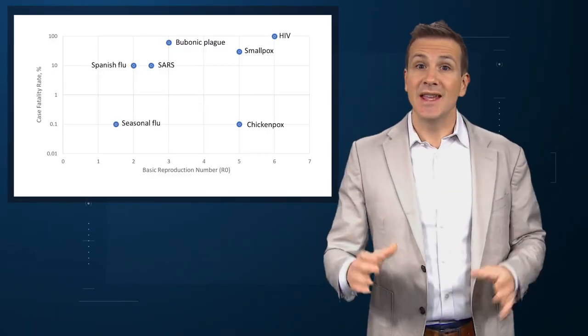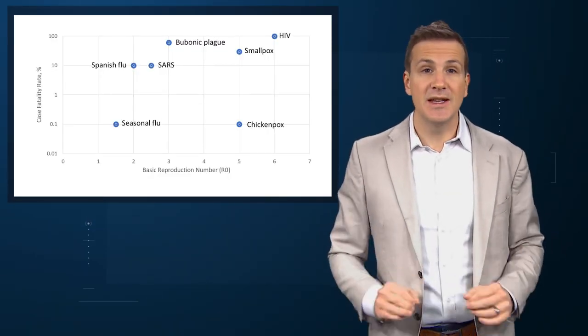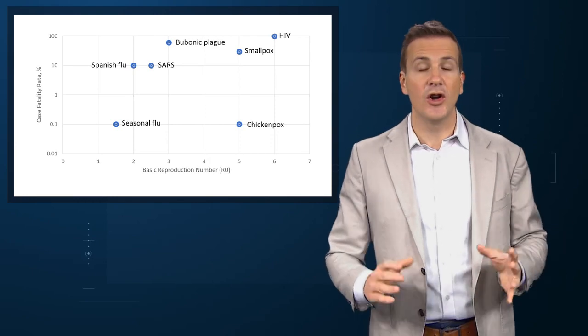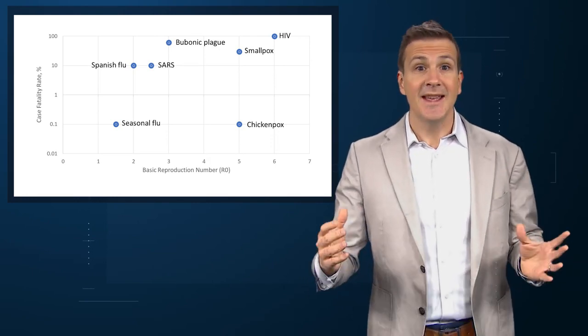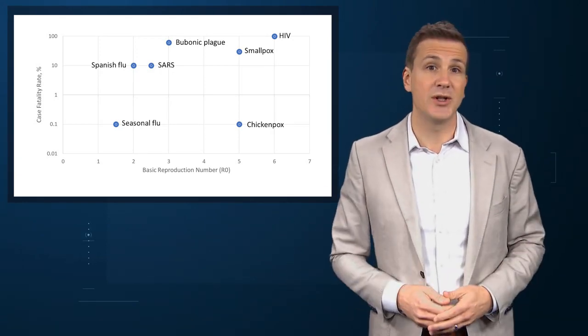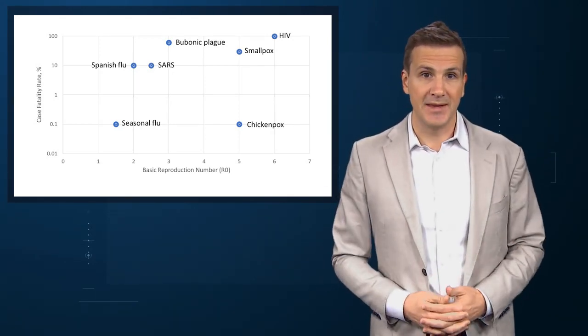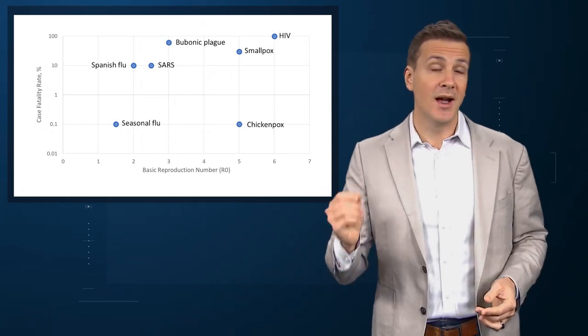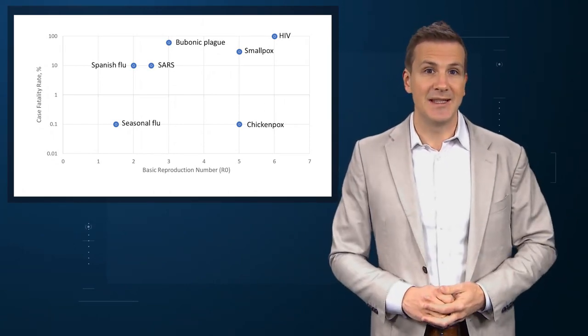Fortunately, evolutionary processes tend not to favor highly fatal diseases — after all, a dead host doesn't transmit more disease to others. The exceptions include some of our most feared conditions. HIV, before treatment was available, had an R-naught of around 6 globally and a near 100% mortality rate. Smallpox had an R-naught of 5 and a mortality rate of 30% in the unvaccinated. Bubonic plague had an R-naught of 3 and an untreated mortality rate of 60%.